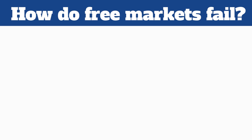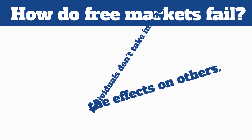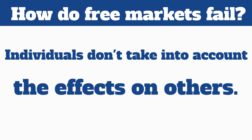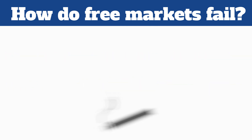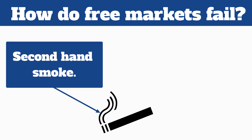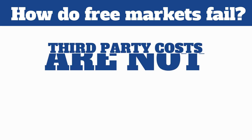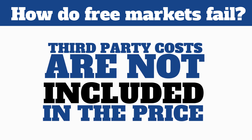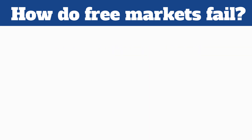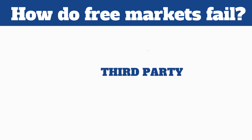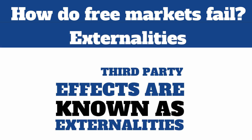This system seems very neat, so what exactly could go wrong with it? The issue is that while individuals will take into account the costs and benefits to themselves, they won't necessarily take into account the effects on others. For example, a person buying a cigarette does not have to worry about secondhand smoke. Secondhand smoke isn't a problem for either the producers or the buyers, so it's not something they take into account when deciding how much to consume or produce. None of these third-party costs are taken into account when the price of a cigarette is determined, so the market price will be too low and people will buy too many cigarettes. These third-party effects are known as externalities, and they can be either positive or negative.